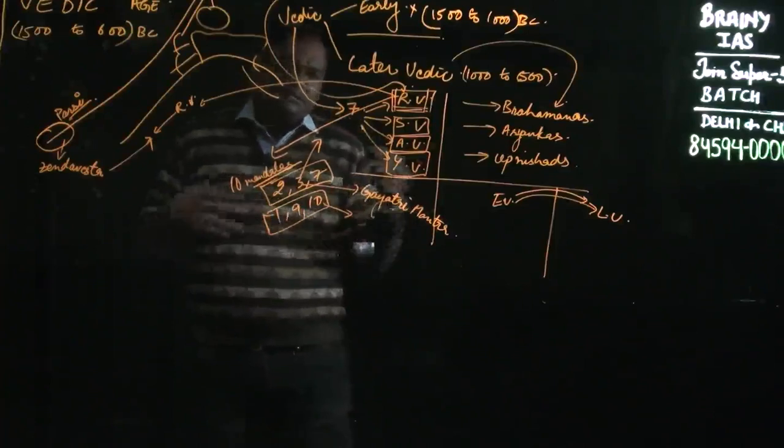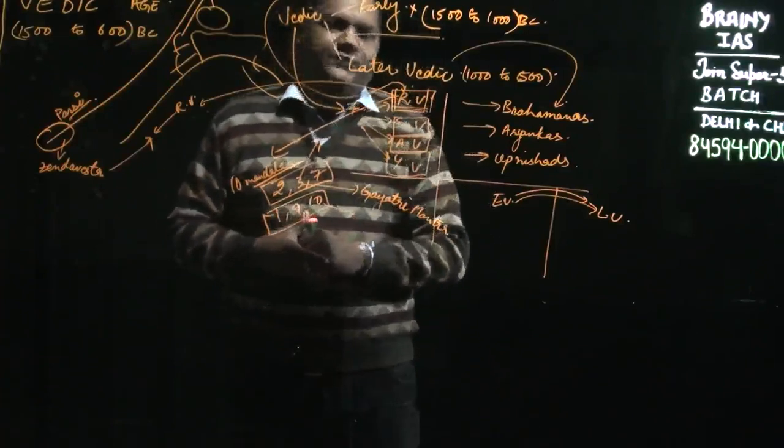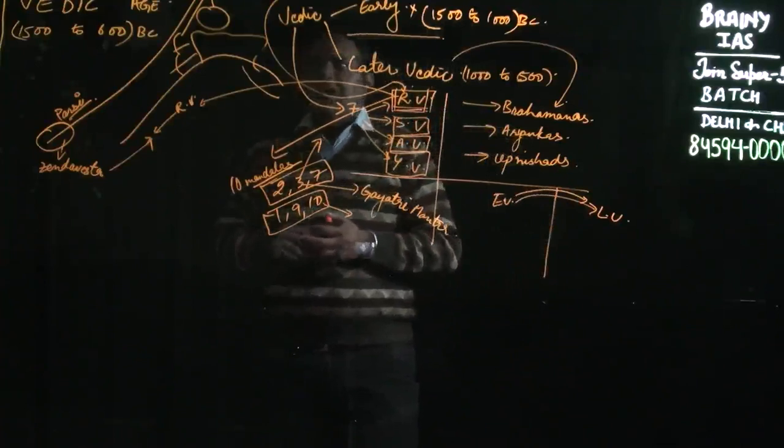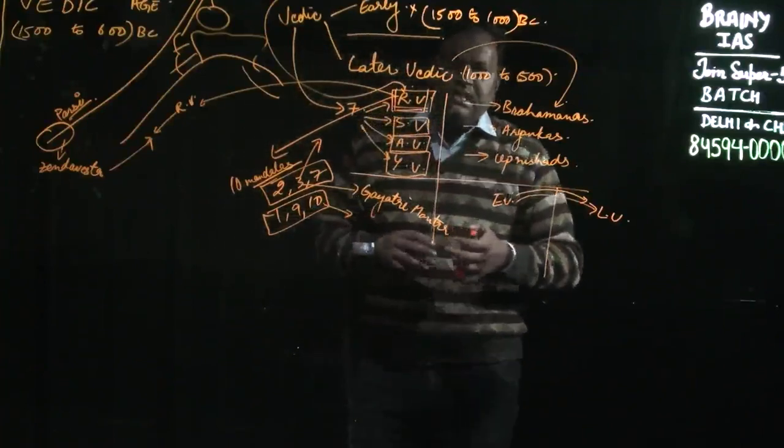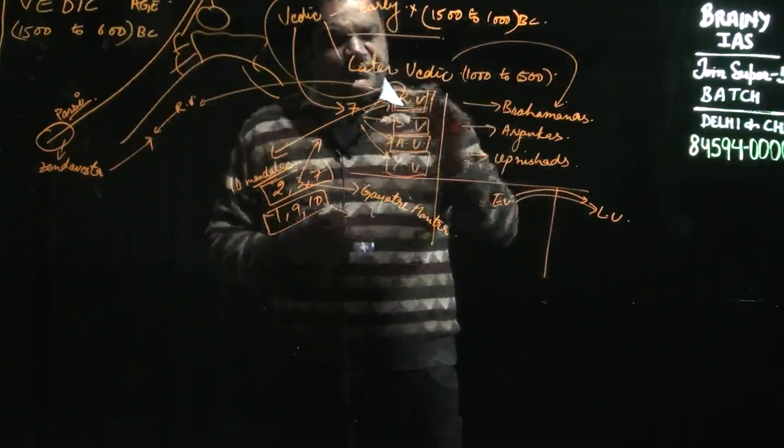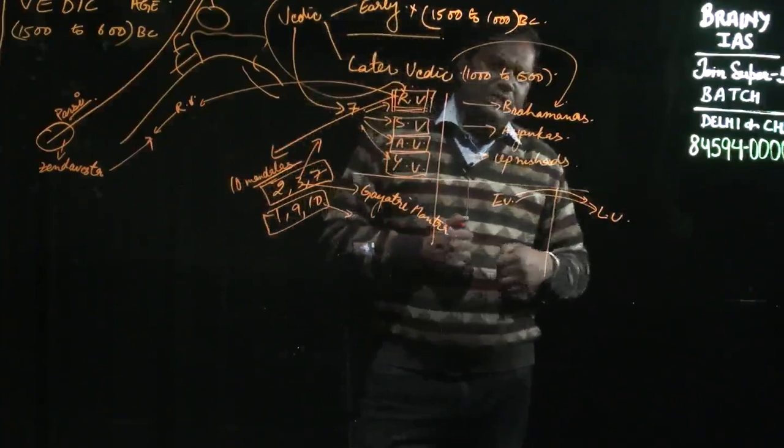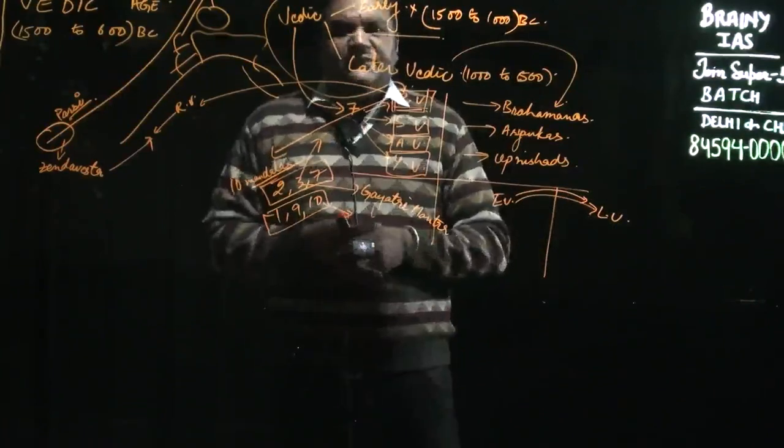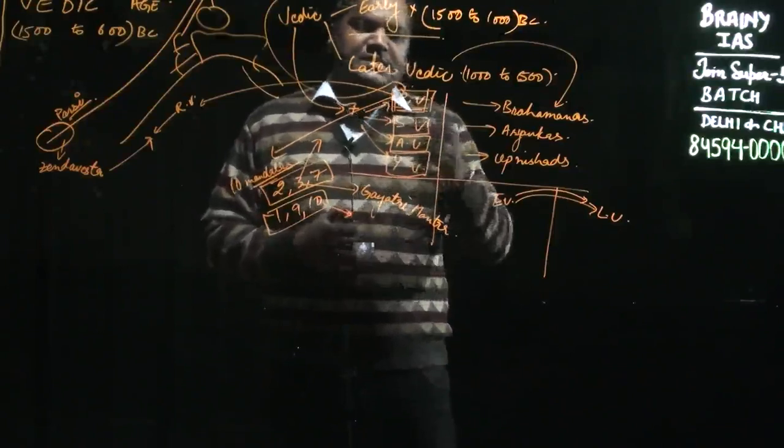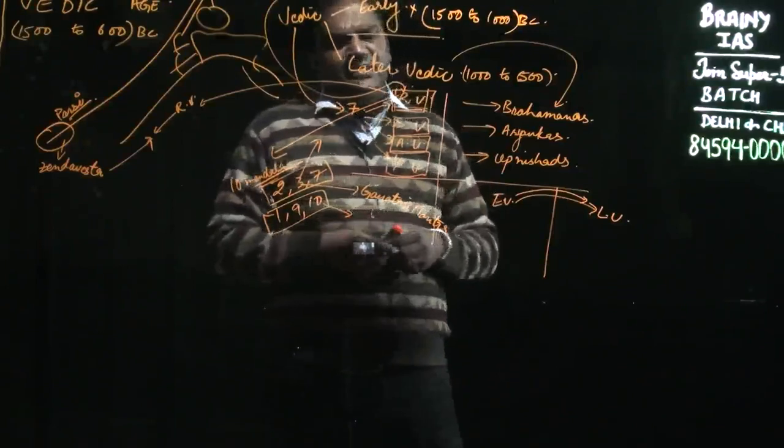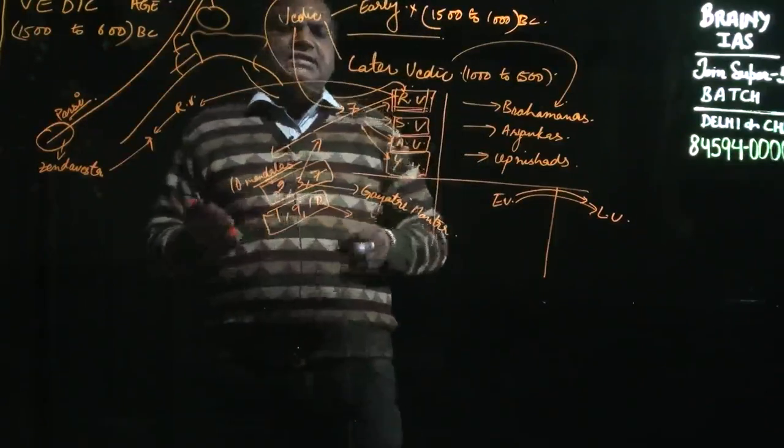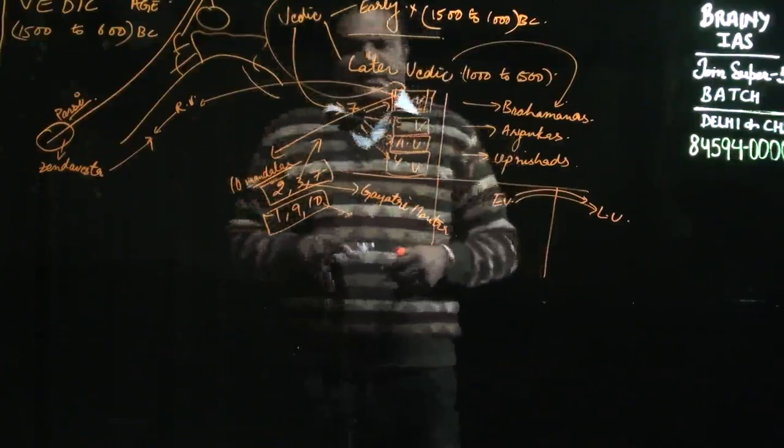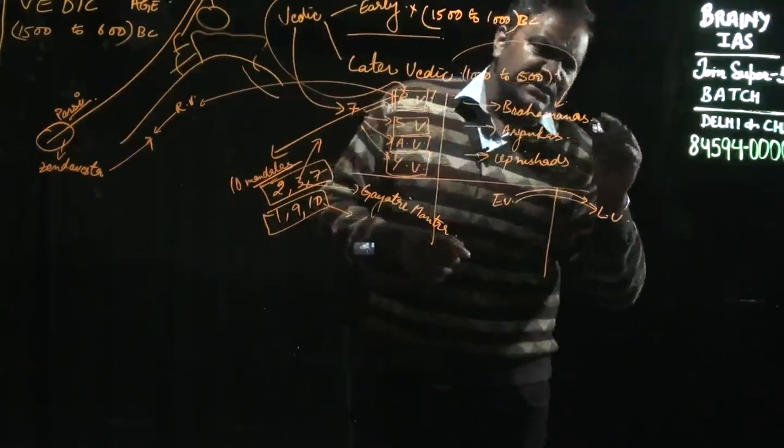Yajurveda is a Veda which has rituals in its form. If there is something mentioned in Rigveda, like a mantra which has to be pronounced, then what are the various rituals or basic formalities to perform that particular mantra are in Yajurveda. Yajurveda is in prose and verse form.